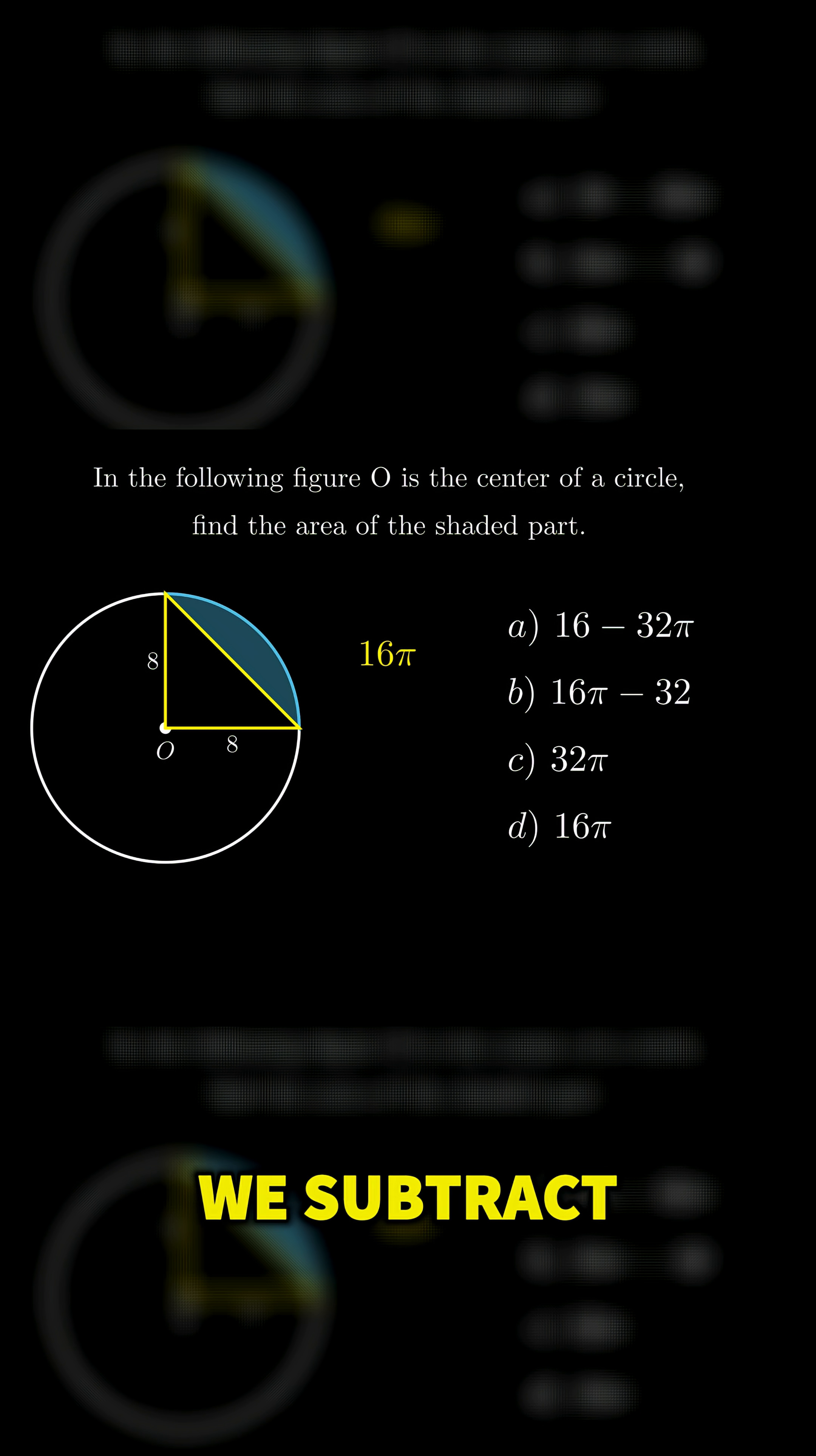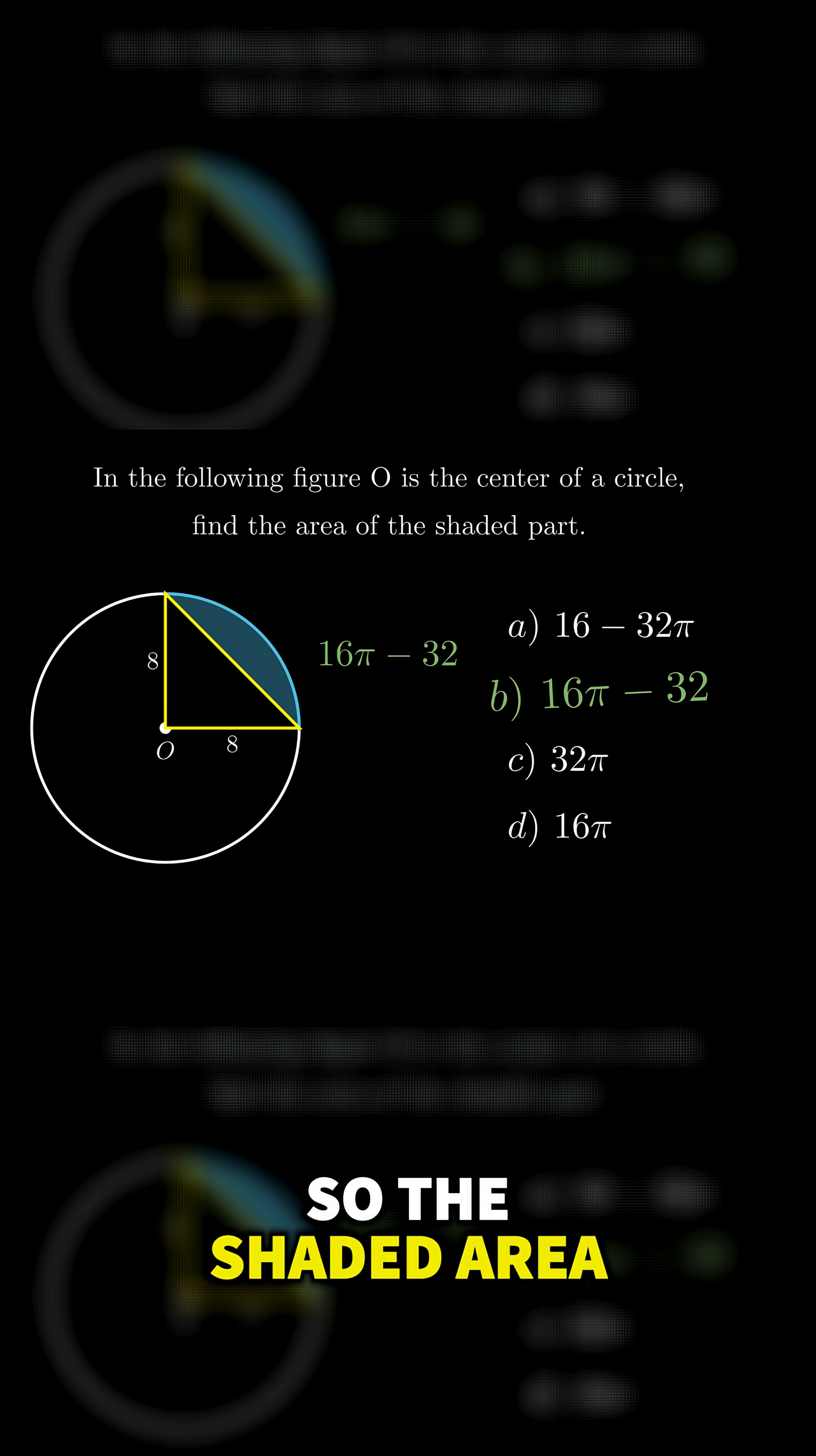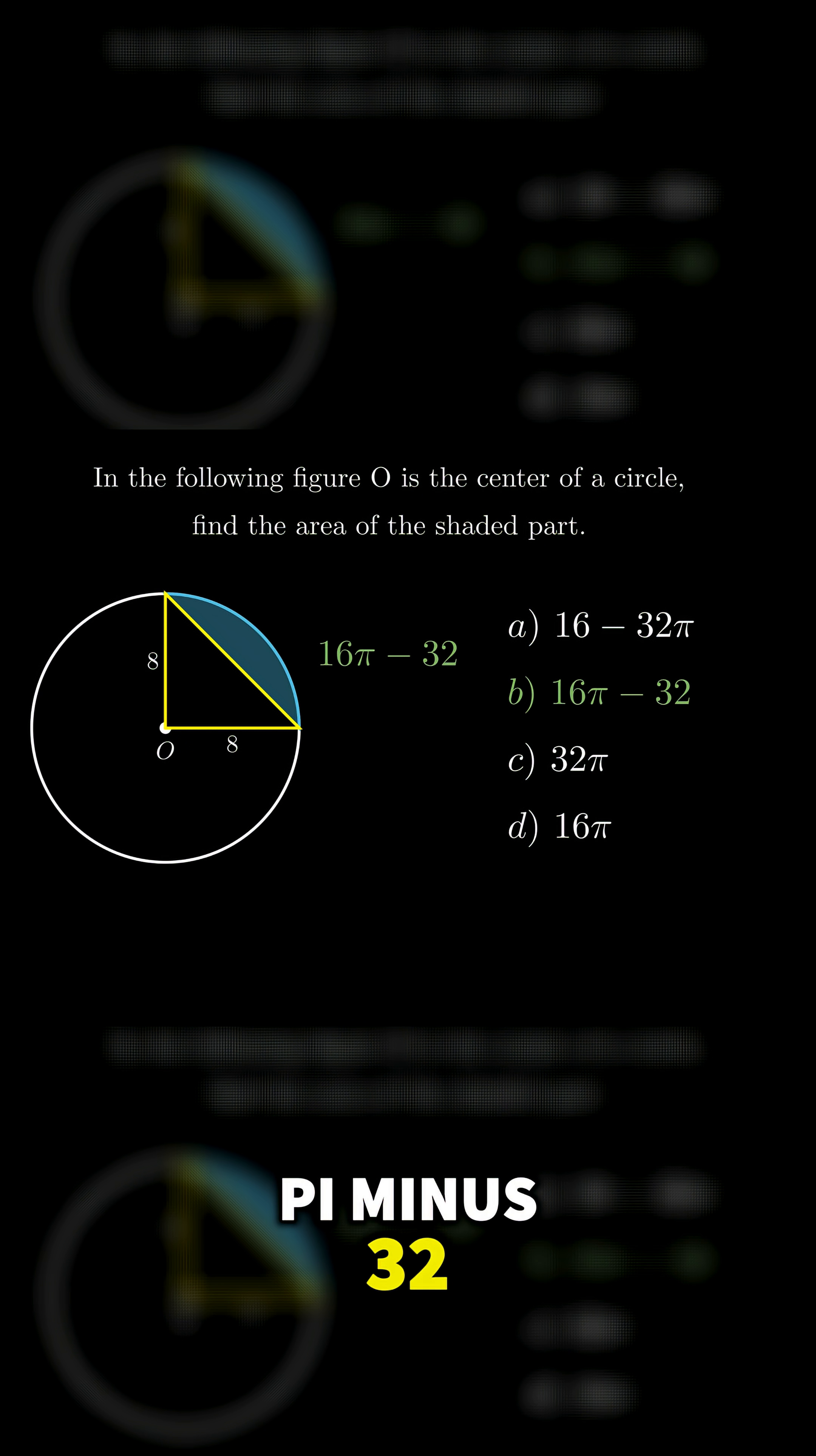To find the shaded area, we subtract the triangle area from the quadrant's area. So the shaded area is equal to 16π - 32.